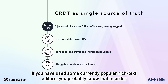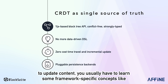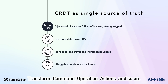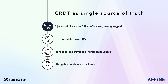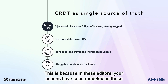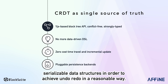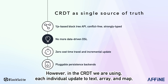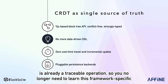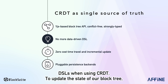So, what's the difference here? If you have used some currently popular rich text editors, you probably know that in order to update content, you usually have to learn some framework-specific concepts like transform, command, operation, actions, and so on. This is because in these editors, your actions have to be modeled as serializable data structures in order to achieve undo-redo in a reasonable way. However, in the CRDT we are using, each individual update to text, array, and map is already a traceable operation, so you no longer need to learn these framework-specific DSLs when using CRDT.